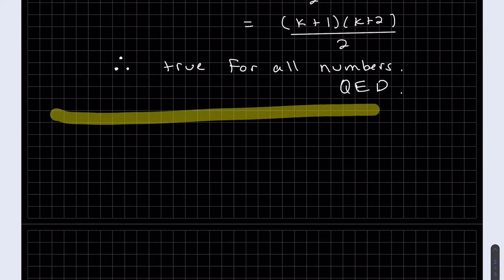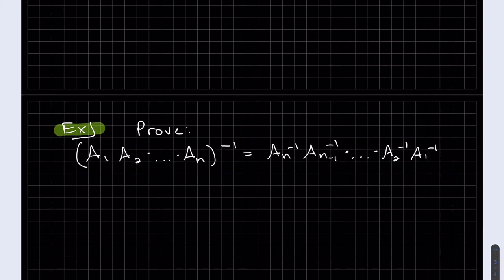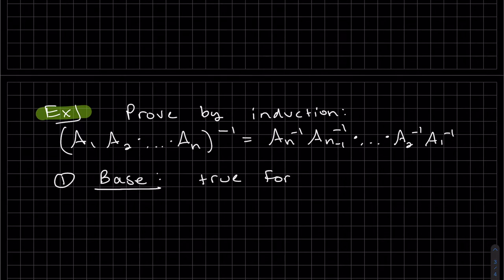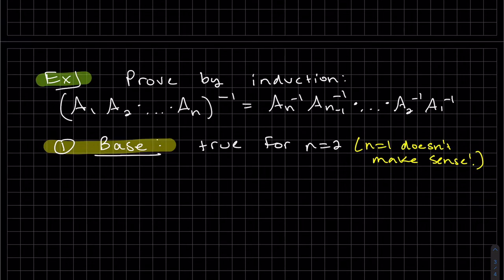Let's do another one. So we're going to prove true for n equals 2. n equals 1 doesn't make sense because there would only be one of them. And there would be nothing to change the order of. So you do need to check. And you need to write this step. And yes, that's true. We actually proved that was true in the last video. So I'm going to check mark it.